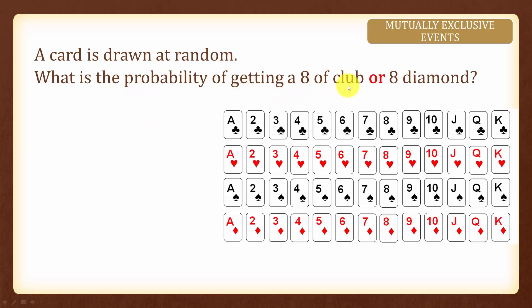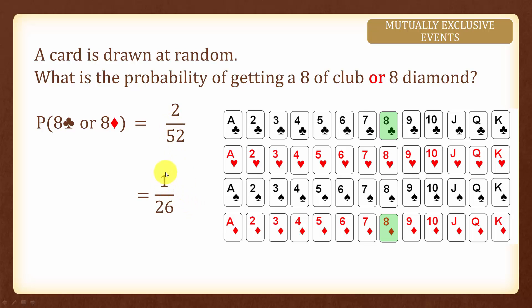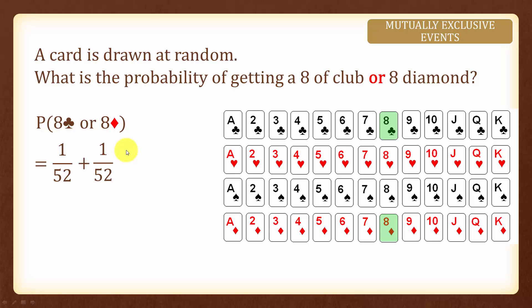What is the probability of getting an ace of clubs or an ace of diamond? There is one ace of clubs and one ace of diamond. The probability of getting either of them will be 2 over 52, which is equal to 1 over 26. We can also write this as 1 over 52 plus 1 over 52, which equals 2 over 52, simplified to 1 over 26.